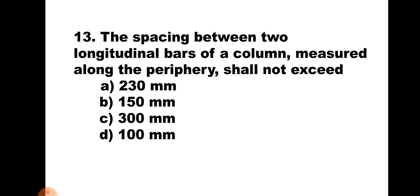Question number 13. The spacing between two longitudinal bars of a column measured along the periphery shall not exceed: A) 230 mm, B) 150 mm, C) 300 mm, or D) 100 mm. The distance between two bars shall not exceed 300 mm as per IS 456. Hence the correct answer is C, 300 mm.